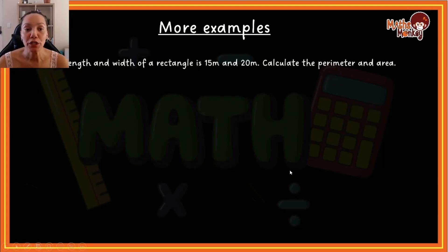This question says the length and the width of the rectangle is 15 meters and 20 meters. Calculate the perimeter and the area. When we're calculating the perimeter, we're going to say length multiplied by 2 and breadth multiplied by 2, because that is our formula. The length, we usually always take the longest, the bigger number, and the breadth or the width is 15.